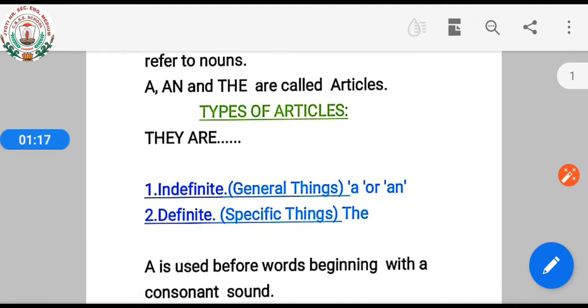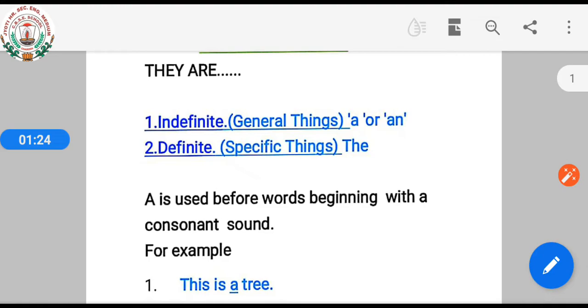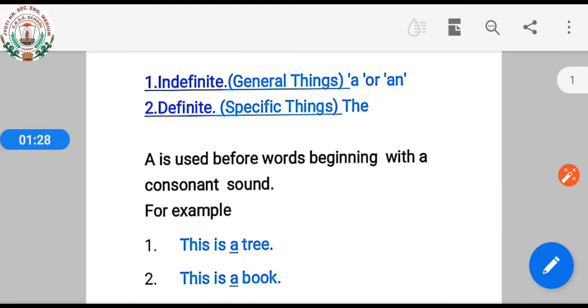A is used before words beginning with a consonant sound. Where words begin with consonant sound, we use 'a'. It's the consonant sound, not the consonant letter.